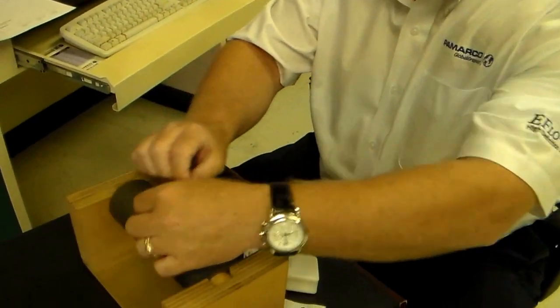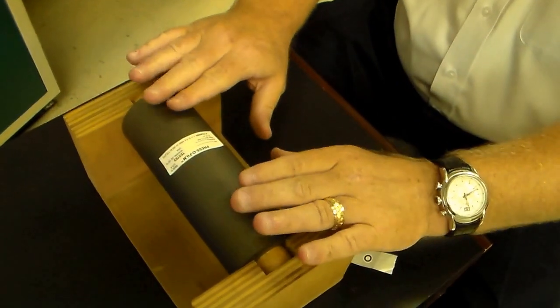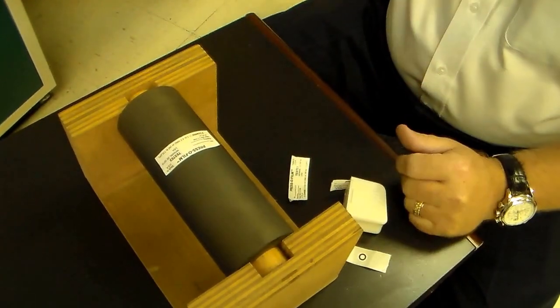We're going to apply that perpendicular to the anilox roll. We want to make sure that the roll is clean and dry when we do this.